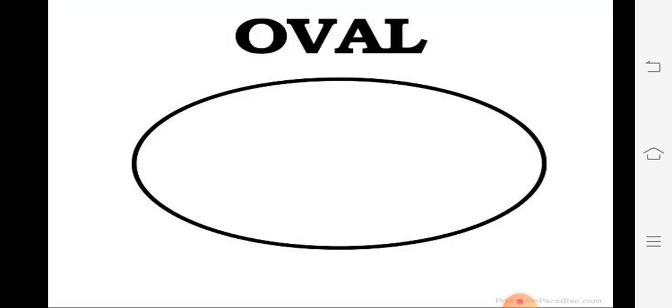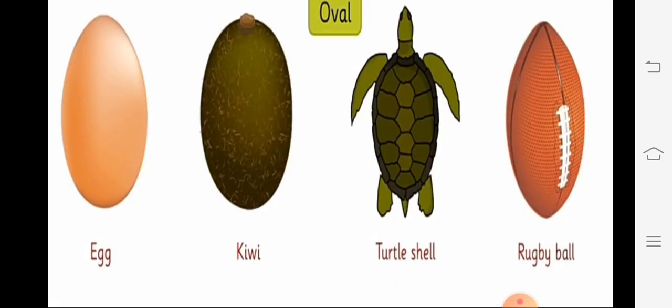And our next one is oval. Oval kya hai? Ek shape hota hai jo circle se thoda different hota hai. Here, look at some examples of oval shapes. First one is egg — egg ka jo shape hota hai, wo oval shape hota hai. And the next one is kiwi — kiwi ek fruit hai, uska bhi shape oval hota hai. And the third one is turtle shell — turtle ka jo shell hota hai, wo oval shape ka hota hai. And rugby ball ka bhi shape oval hota hai. Yahan pe humne bahut saare shapes dekhe oval ke.